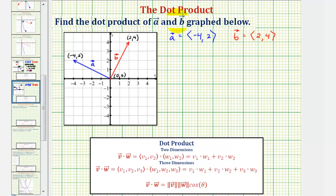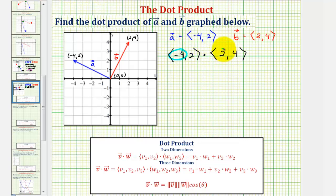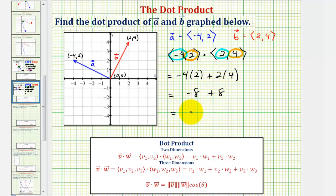Let's find vector A dotted with vector B. The order of the dot product doesn't matter — the result would be the same. So our dot product equals negative four times positive two, plus two times four, which is equal to negative eight plus eight, which equals zero.